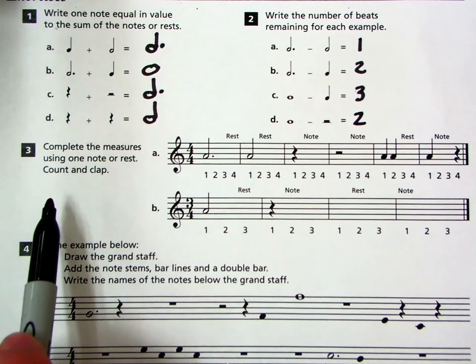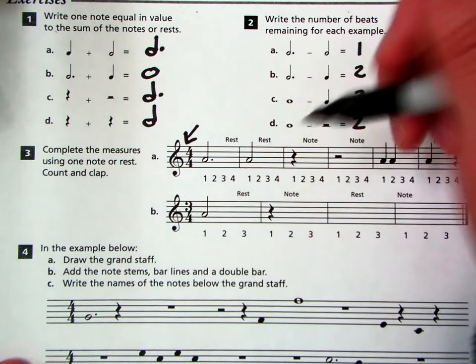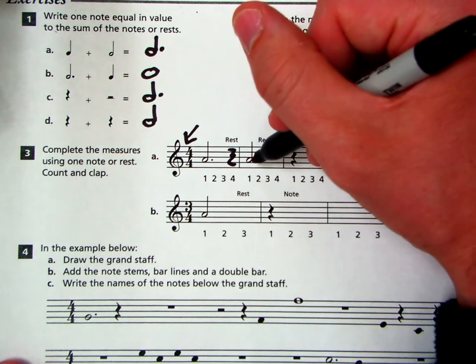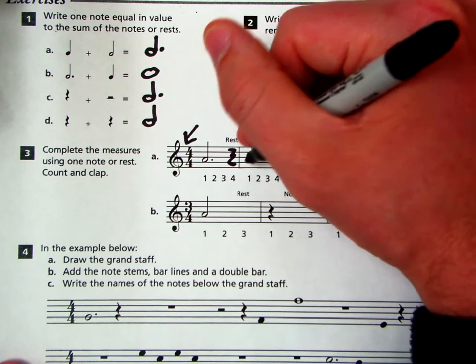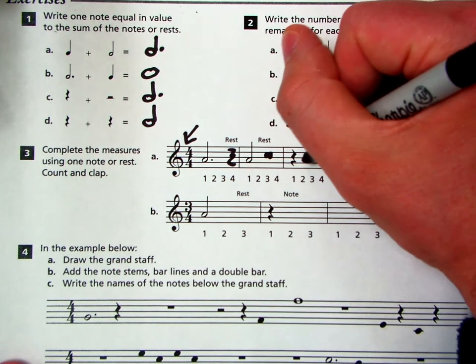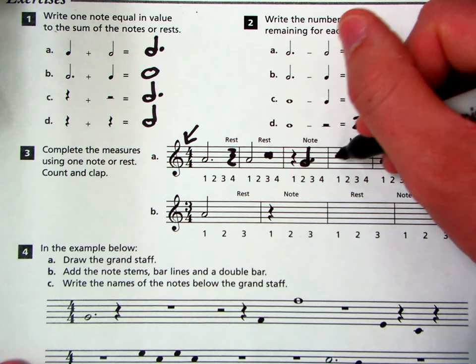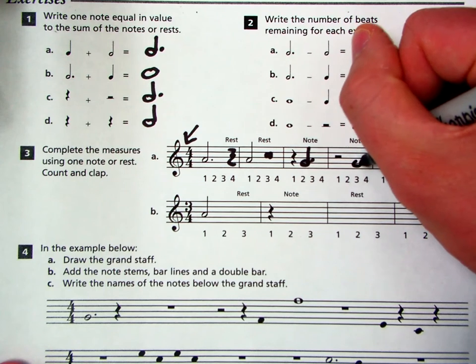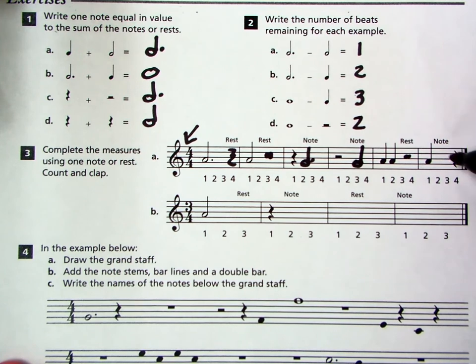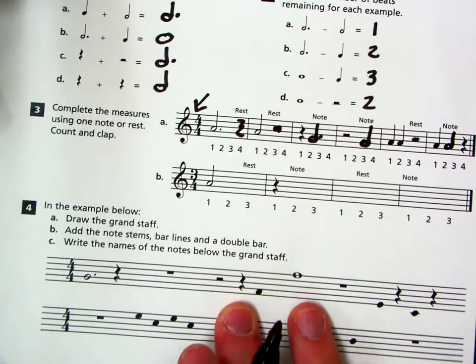Question three. Complete the measures using one note or rest. Alright. So we're in four-four. That's important to know, right? We always look at the time signature first. We need four beats. So one, two, three. And we need a rest worth one. So it would be a quarter rest. We have a half note. They want a rest. So we have four beats. One, two. That means we need a half rest here. We need a note worth three. So above the two, we need a dotted half. For this note, we have two beats. So we need a note worth two. That means we'll add a half note. We need a rest worth two here. So we need a half rest. And we need a note worth two. So that would be a half note.